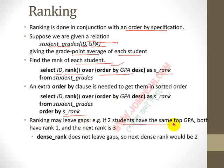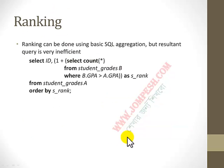If two students have the same top GPA, both receive rank 1 and the next rank is 3 — there is a gap. Dense rank does not leave gaps: if two students share rank 1, the next dense rank would be 2.